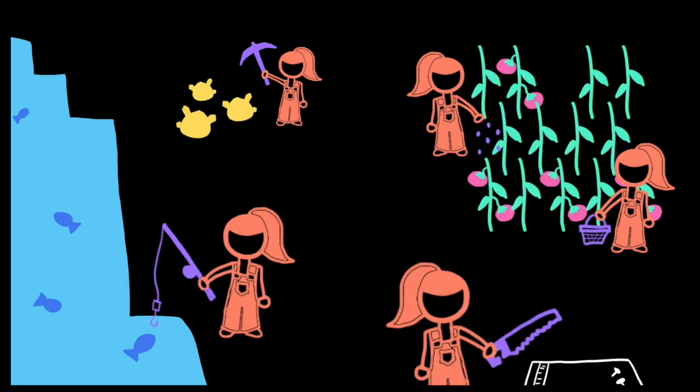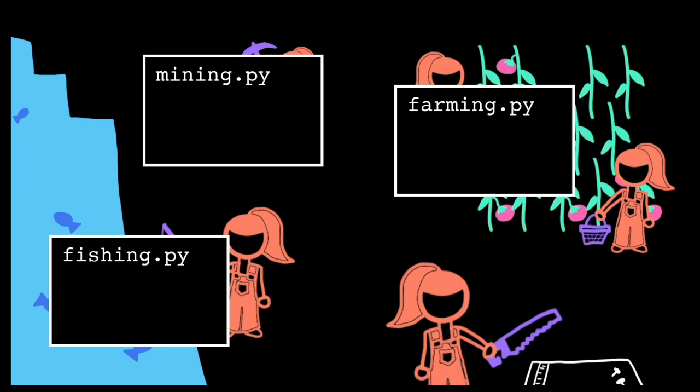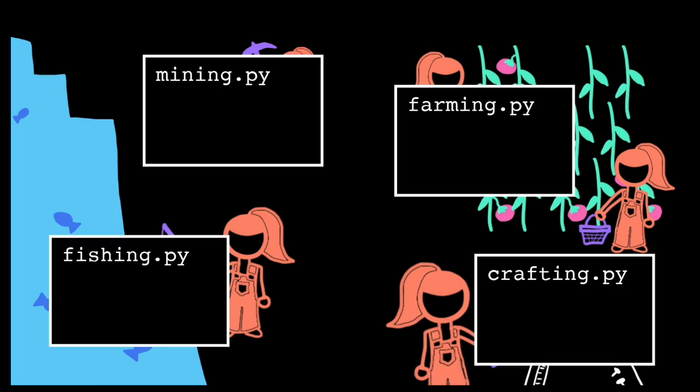Typically, when we modularize a program, we organize it into different modules, where each module or file contains the code for a related set of functionality. Then, within a module, we break down that functionality into individual functions, where each function contains the instructions for performing a specific task.